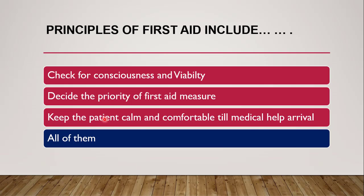The first aider should then decide the priority of giving first aid measures — for example, restoration of cardiac functions, breathing, stoppage of bleeding, and whatever other symptoms are present. After providing first aid, the first aider should also arrange for medical help to arrive.